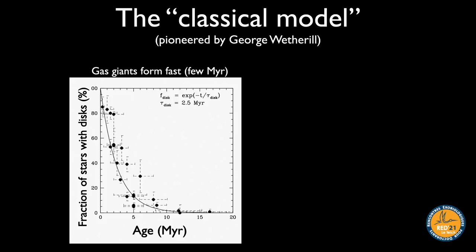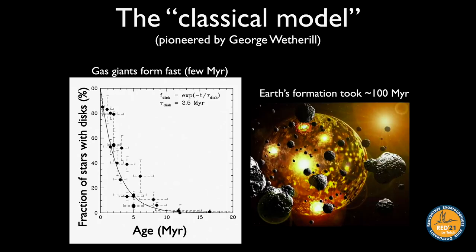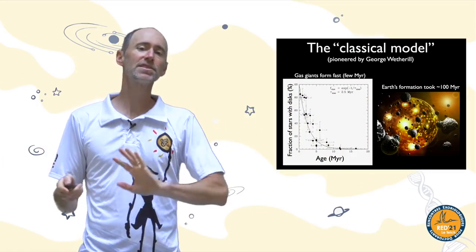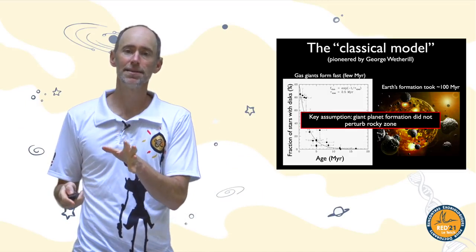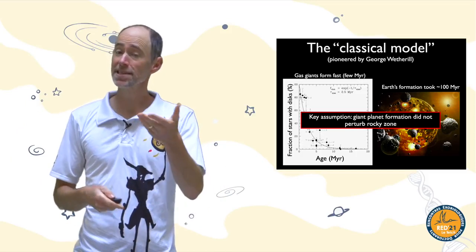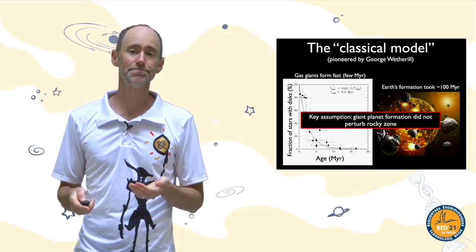The key assumption of the classical model is that the growth of terrestrial planets and giant planets can be treated separately. We don't need to know exactly how the giant planets formed — we just plop them in and see what happens to the terrestrial planets. As we'll see later, this assumption really undoes the whole model.